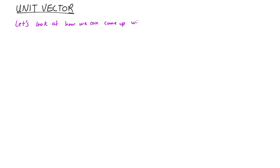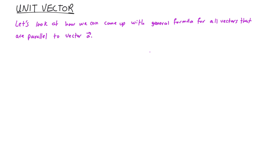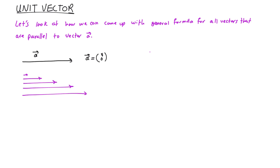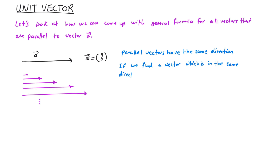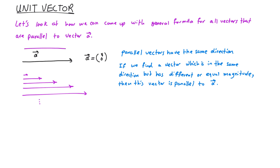Now let's look at the unit vector. We're going to look at how we can use vector a to find another vector which is parallel to vector a but has a different magnitude. Based on our current knowledge, parallel vectors have the same direction. If we find a vector with the same direction but different or equal magnitude, we know it is parallel to vector a.